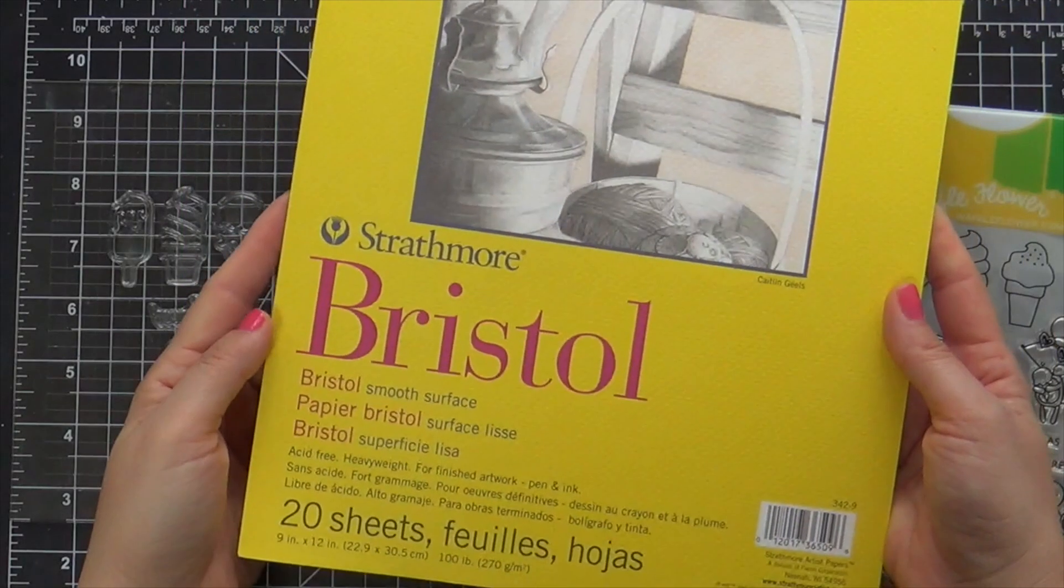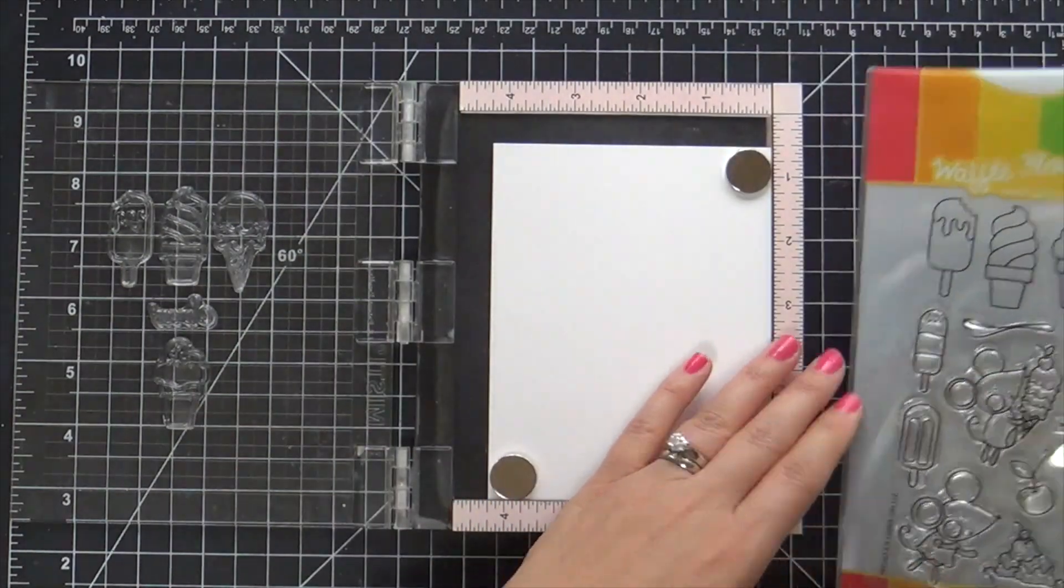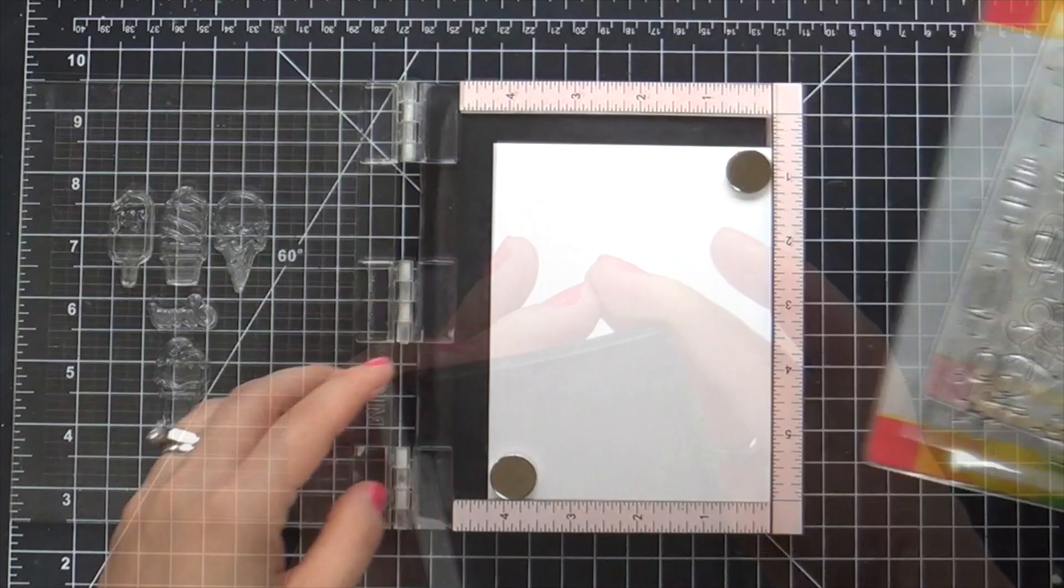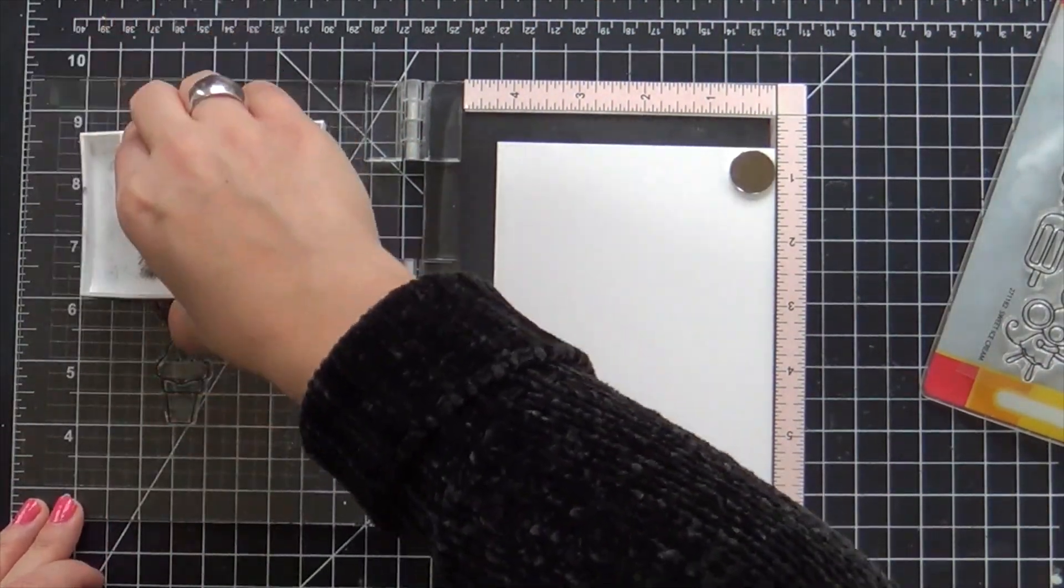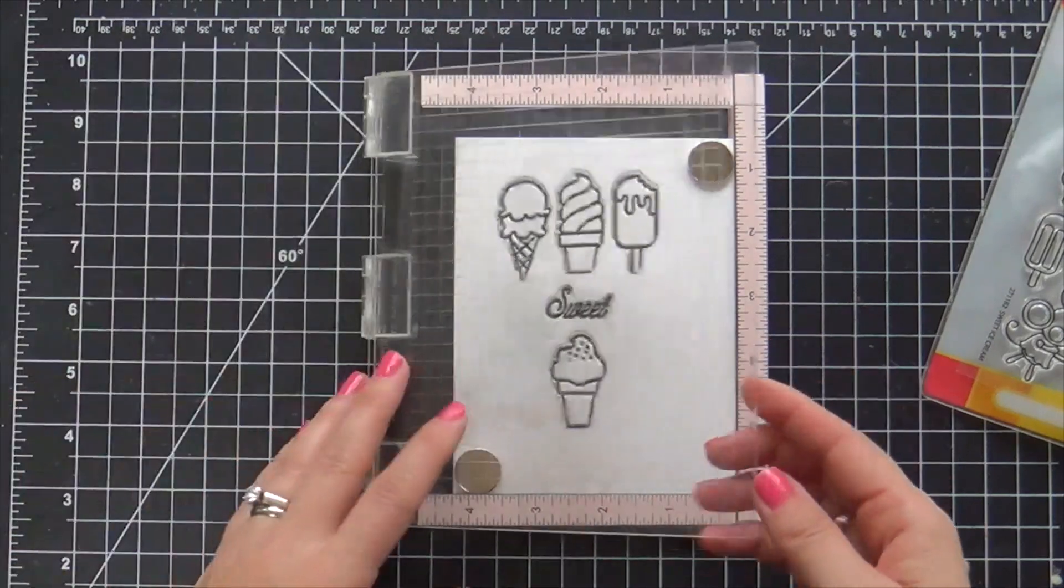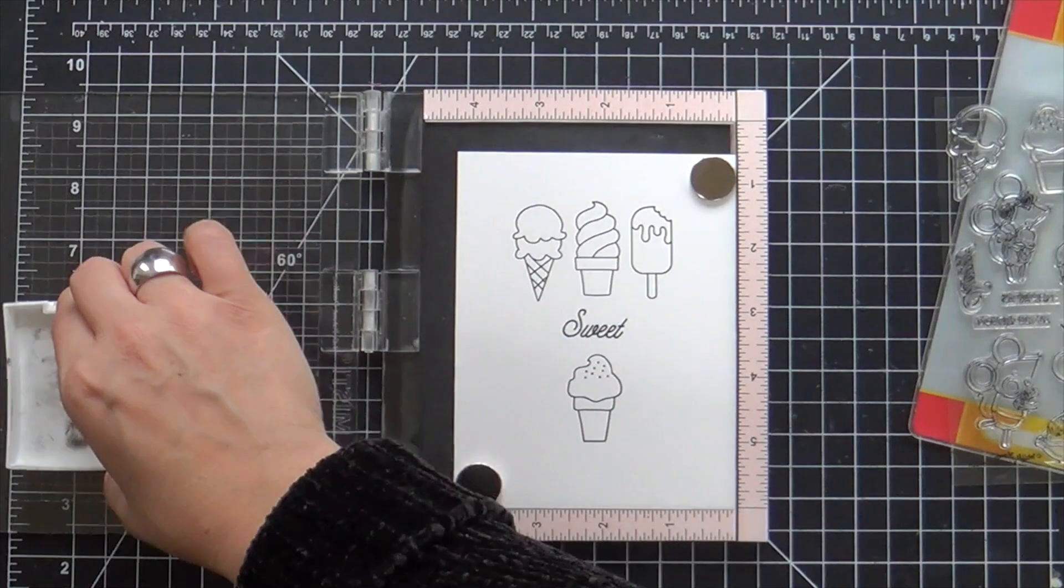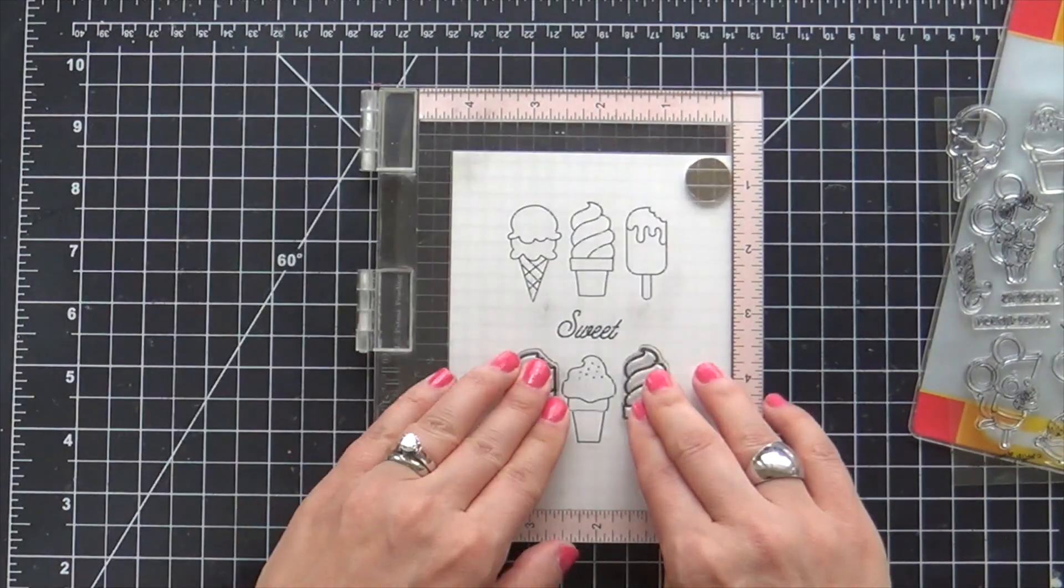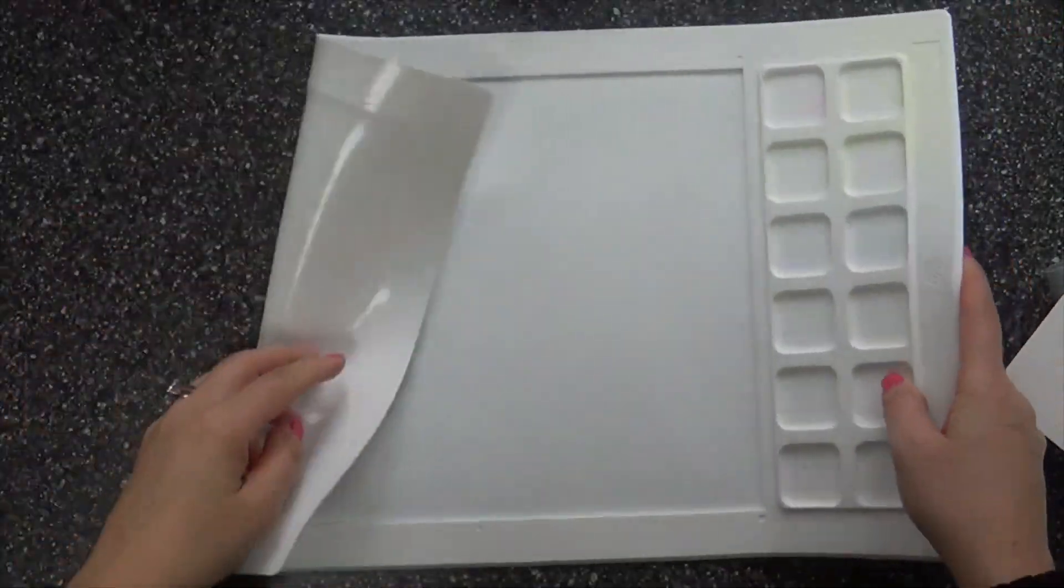I'm going to be stamping my images on some Bristol paper. The reason I'm using Bristol is because I'm going to be coloring my images. This is the sweet ice cream stamp set, and I'm stamping with Versafine Onyx Black ink, which is my all-time favorite black ink in all the land. It works great when you're using a wet medium. I'm going to be using my Zig Clean Color markers, and you can do that with Versafine Onyx Black ink. It works great on Bristol paper.